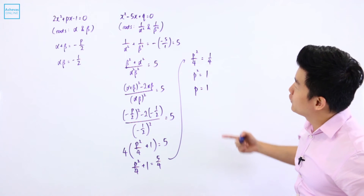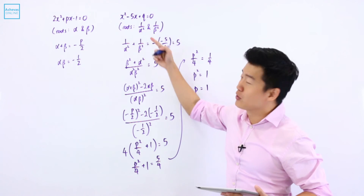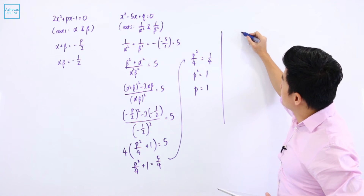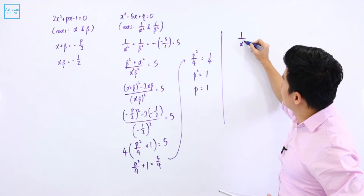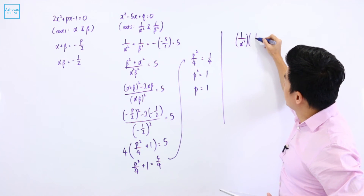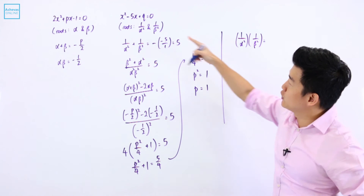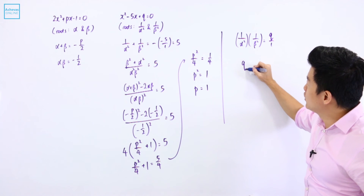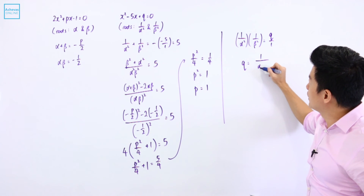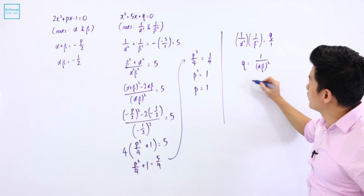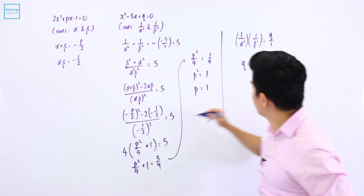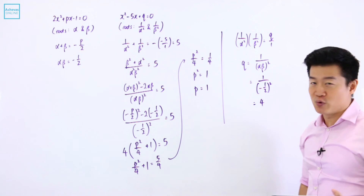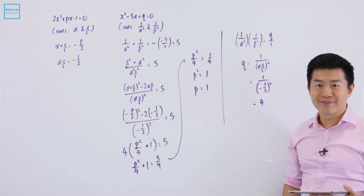As for Q, I can solve that by going for the product of roots. It is going to be 1 over alpha squared multiplied by 1 over beta squared, and this is going to be equal to Q over 1, which means that Q is equal to 1 over (alpha beta) squared. And alpha beta is equal to minus half, so it is minus half squared. So Q is going to be equal to 4.